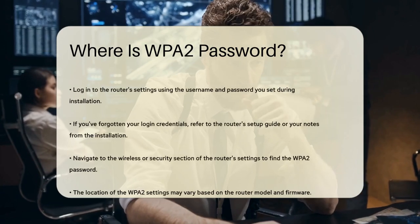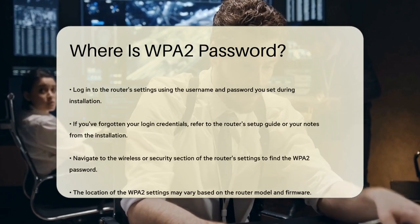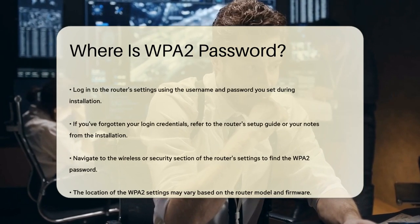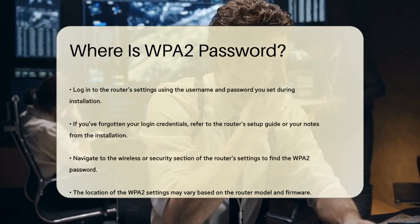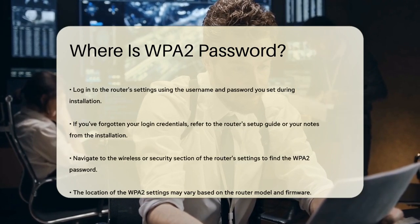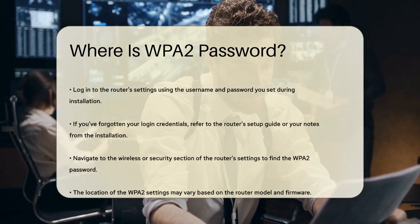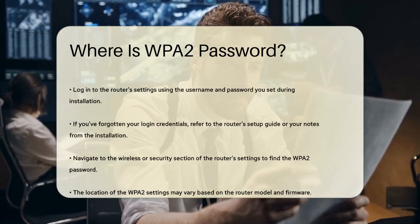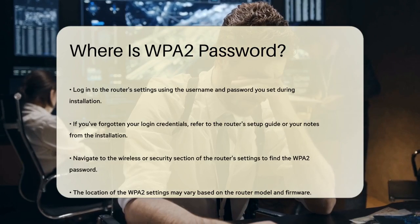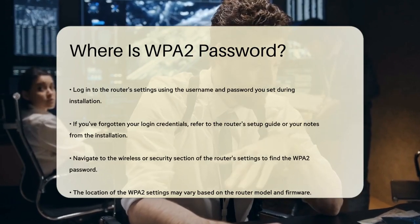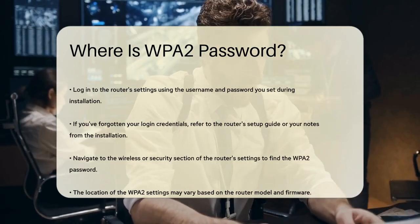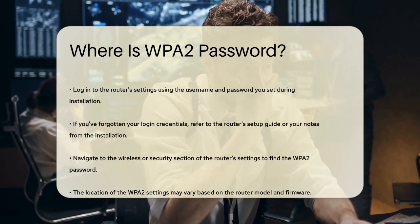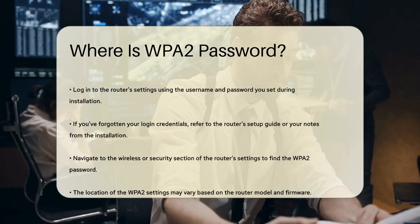Once you've entered the IP address, you'll need to log in to the router's settings page using the username and password you set up when you installed the router. If you've forgotten these credentials, check your router's setup guide or the notes you made when you reset them. After logging in, navigate to the wireless or security section of the settings. Here, you'll find the WPA2 settings, where you can view and modify your current password. The exact location may vary depending on your router model and firmware, but it's typically under a section labeled wireless settings or security settings.